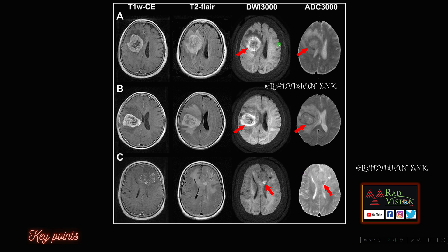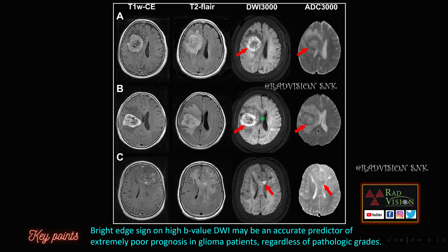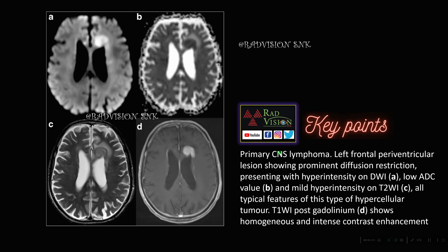Next: this was a case of glioma. Here you can see there is a peripheral bright rim sign noted along the glioma, seen when high b-values are used on diffusion weighted imaging. This bright edge sign or bright rim sign on high b-value DWI is an accurate predictor of extremely poor prognosis in glioma patients. Whenever you see this bright rim sign, it predicts poor prognosis of the glioma regardless of the pathological grade. Remember the bright edge sign as a predictor for poor prognosis in gliomas.